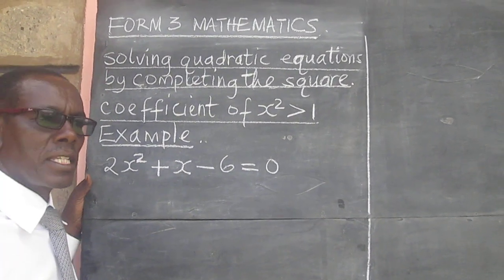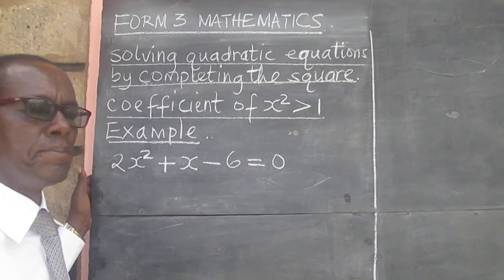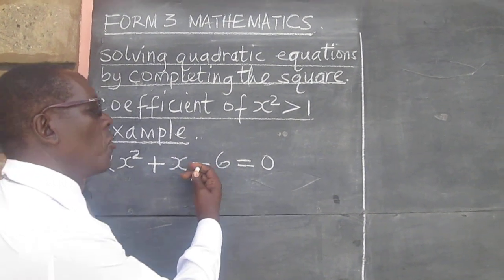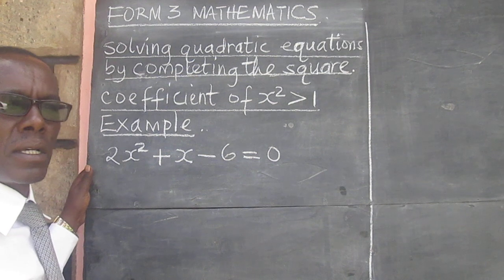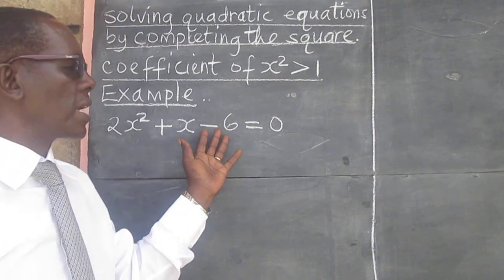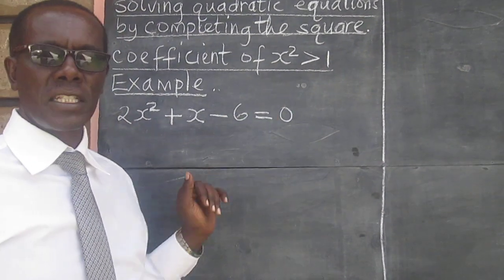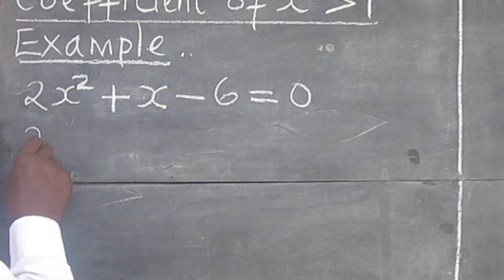The example is here for us. So step number 1. We move the 6 to the other side and because the sign here is negative, on the other side it is going to be positive. So we have 2x² + x = 6.